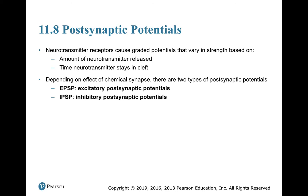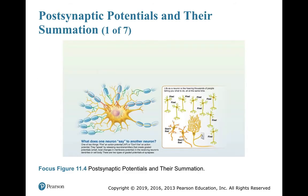Chemical synapses generate postsynaptic potentials regulated by the amount of neurotransmitter and the time it stays in the cleft. There are two types: an EPSP, excitatory postsynaptic potential, or an IPSP, inhibitory postsynaptic potential. The life of a neuron is like having many voices — some saying fire, some saying don't fire — and the neuron must integrate all that input to decide whether to pass a signal along. That integration is how we interpret the world.